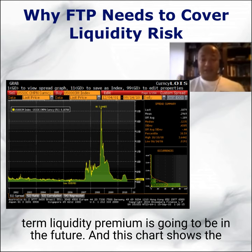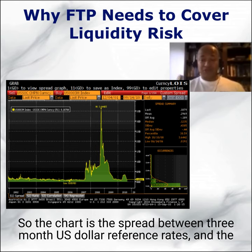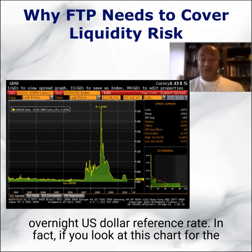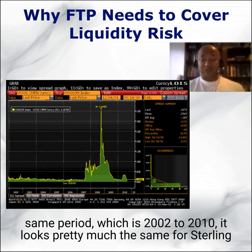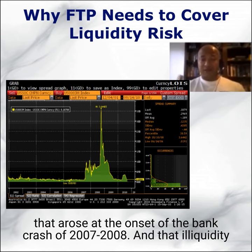This chart shows the spread between the three-month LIBOR and the overnight interest rate for US dollars — specifically the spread between the three-month US dollar reference rate and the overnight US dollar reference rate. For the same period, 2002 to 2010, it looks pretty much the same for sterling and euros. The chart shows the illiquidity in the money markets that arose at the onset of the bank crash of 2007-2008.